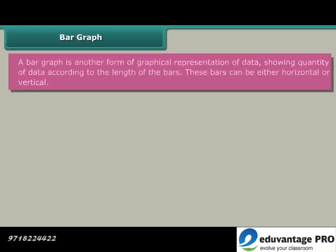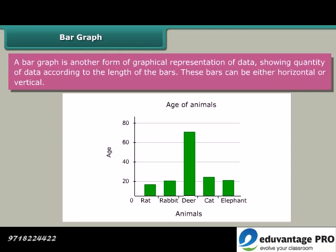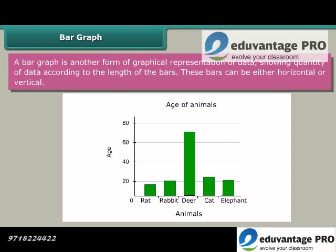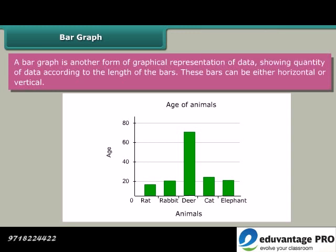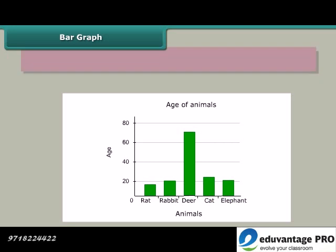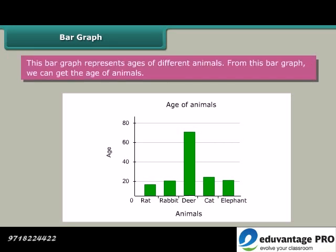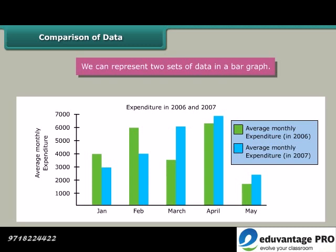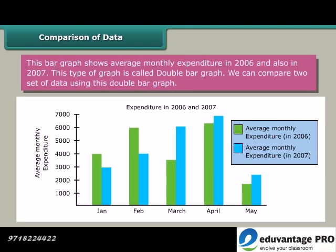Bar graph: A bar graph is another form of graphical representation of data showing quantity of data according to the length of the bars. These bars can be either horizontal or vertical. This bar graph represents ages of different animals. From this bar graph we can get the age of animals.